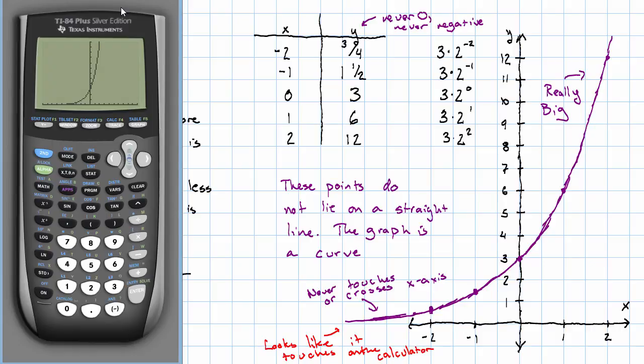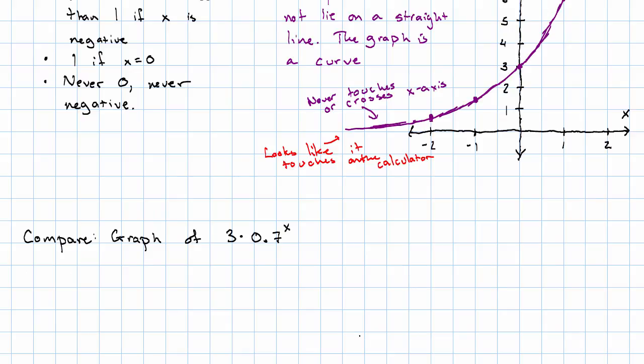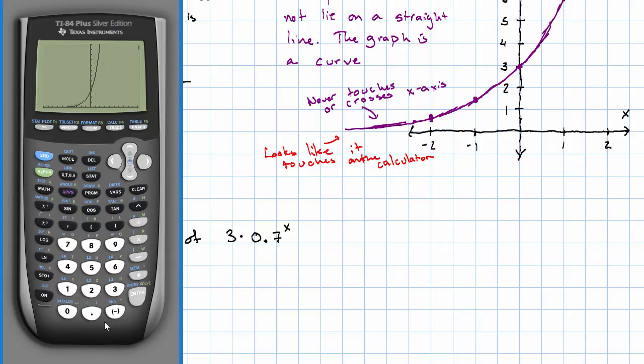There's one big thing that can make a difference to us. Compare this to the graph of 3 times 0.7 to the x. And I'm just going to leave them both on screen for a moment. So here's the old graph. Here's the new graph. The big difference that we see is the old graph got big off to the right and small off to the left. The new graph gets big off to the left and small off to the right.